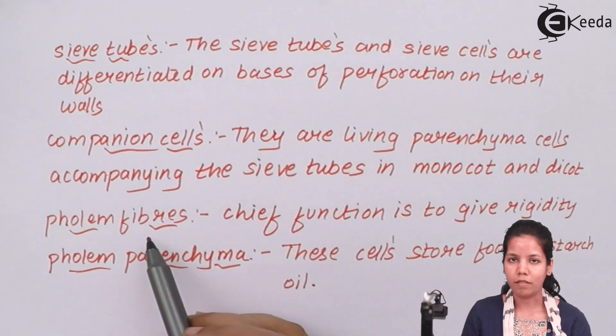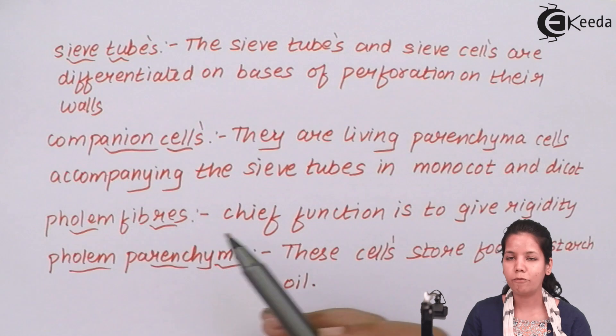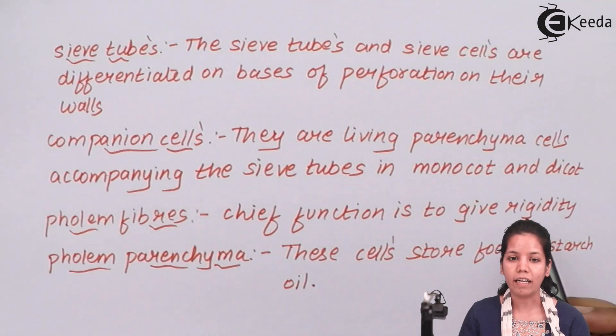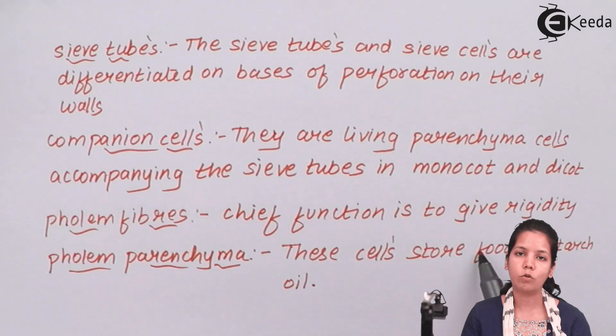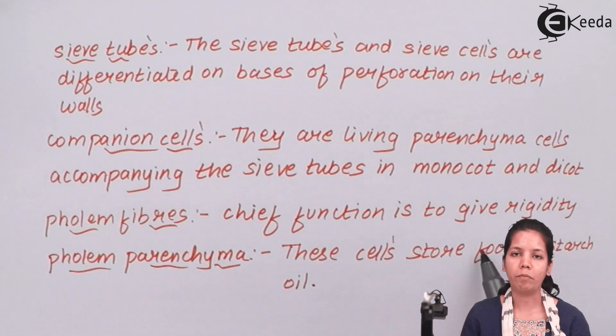Lastly, phloem fibers. Fibers are basically for rigidity or strength when you're conducting or transferring the food material. Phloem parenchyma is the main material that actually stores food, and this stores food in the form of starch while conduction of material is taking place in a cell.